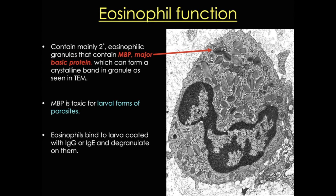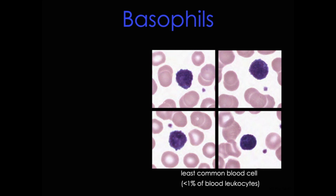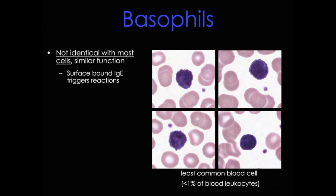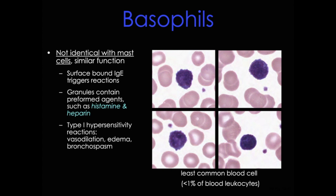Moving on, our final granulocyte is the basophil. This is the least common of the blood cells. It also has two lobes like the eosinophil, but they're very hard to see because of the dark bluish-purple large granules. Importantly, although these cells are related to mast cells, they are not the same — remember, mast cells are found in the tissues but not in the blood. Basophils function similarly to mast cells: their granules contain histamine and heparin, and they secrete IgE. Basophils are typically associated with seasonal allergies and are central to type 1 hypersensitivity reactions. Rapid exocytosis of basophilic granules can result in asthma, hives, rhinitis, and conjunctivitis. Extremely rapid degranulation leads to vasodilation in many organs, causing a drop in blood pressure — that's what we call anaphylactic shock.